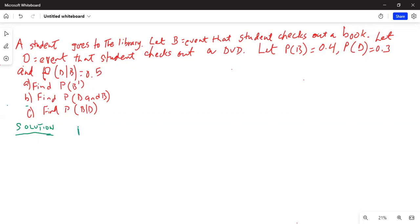The probability of B prime, which is opposite of B, is 1 minus probability of B. So this equals 1 minus 0.4, which equals 0.6. So that's the answer.